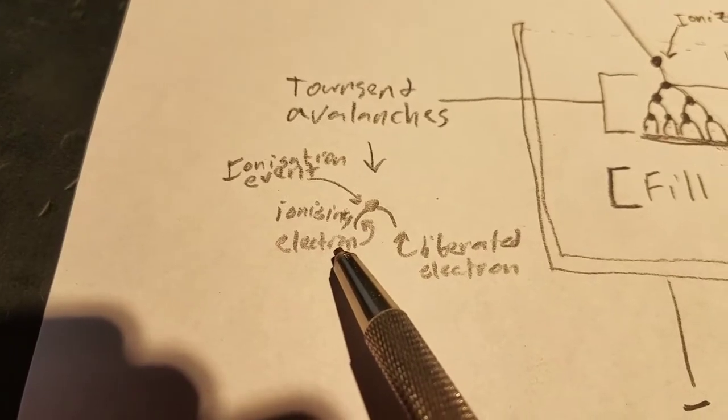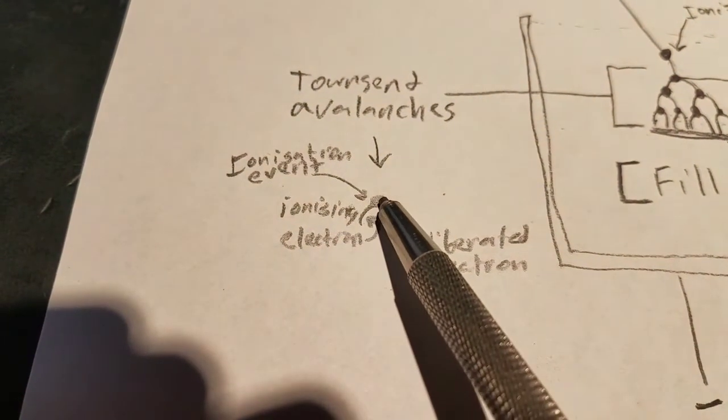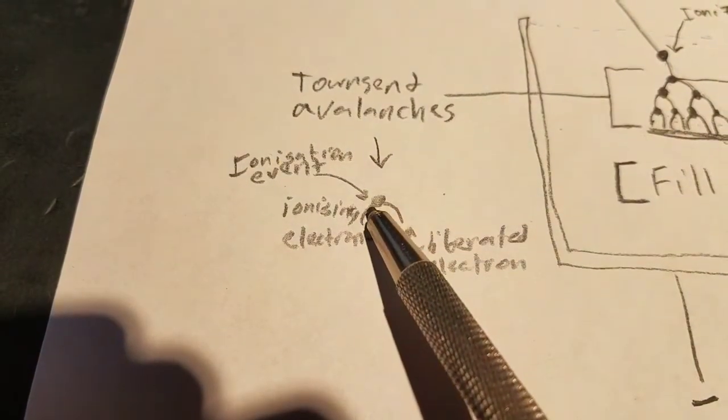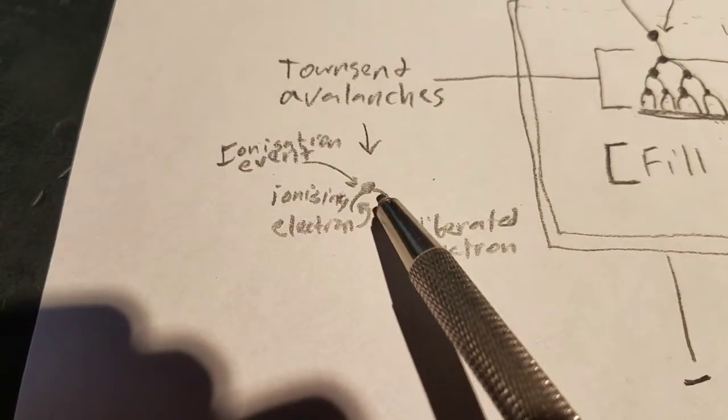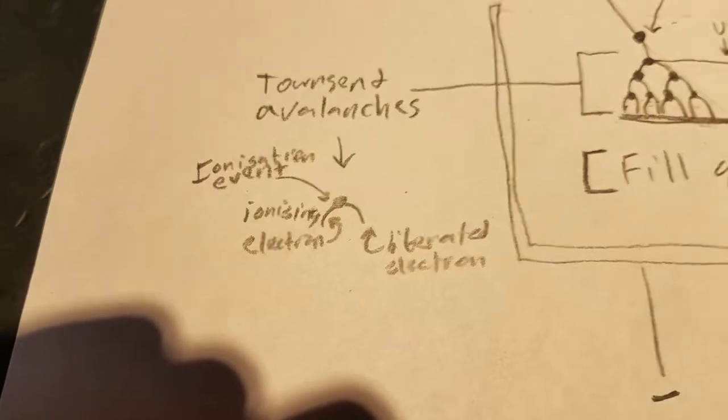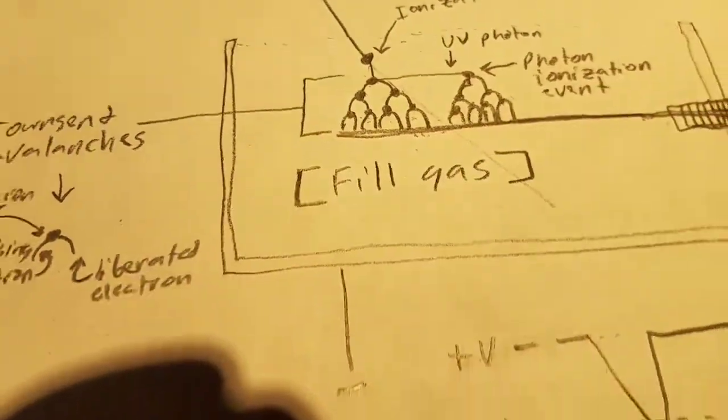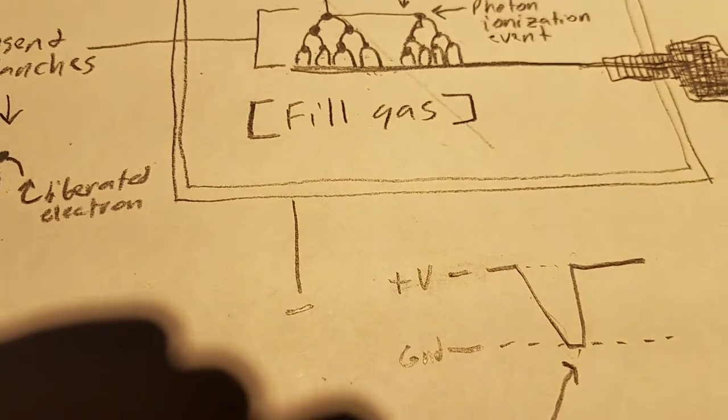The way that the avalanche events work is when you have the initial ionizing event, the ionizing electron will continue and then an electron that's liberated from another atom will split off and continue the path to get to ground. When that shorts out, that's what creates the click on the Geiger counter.